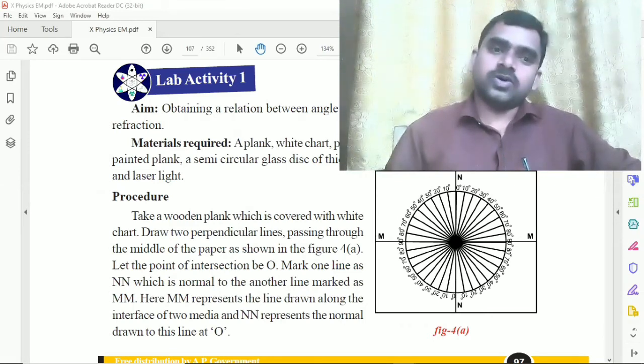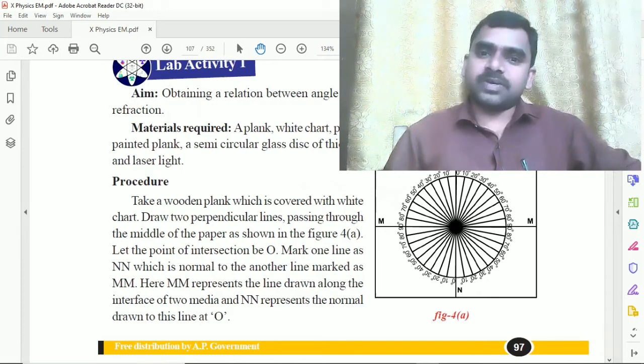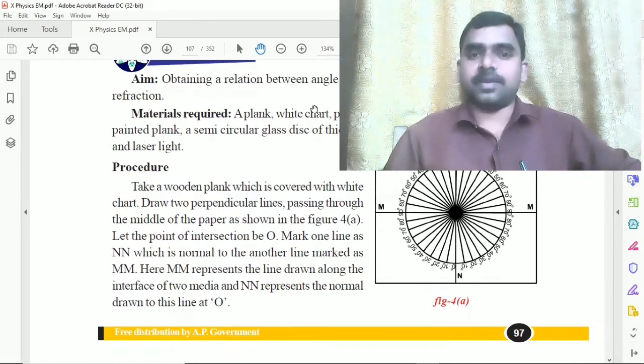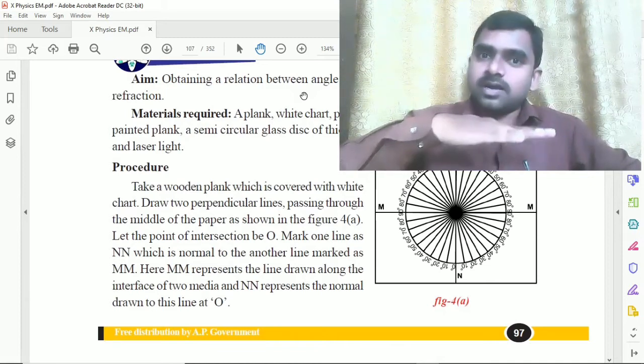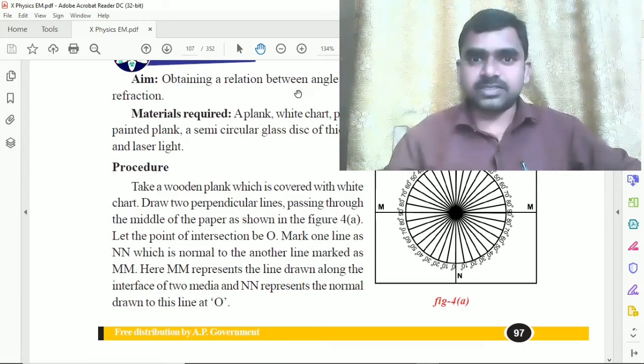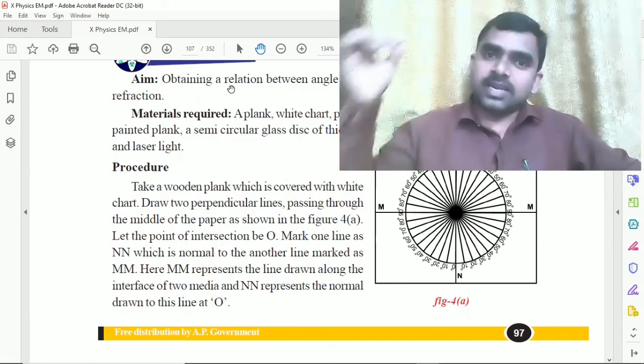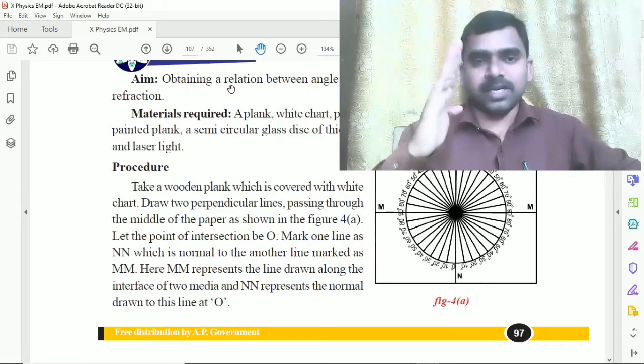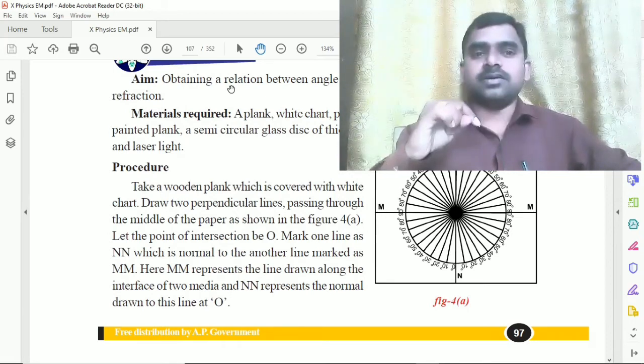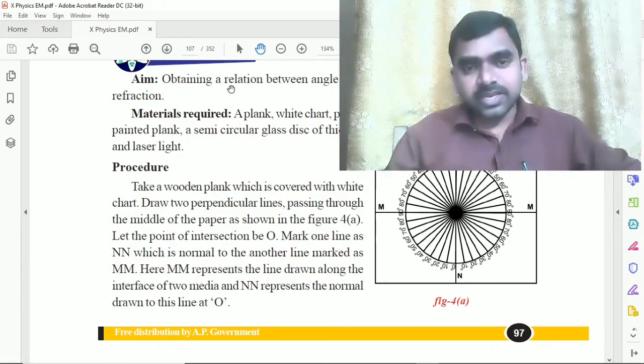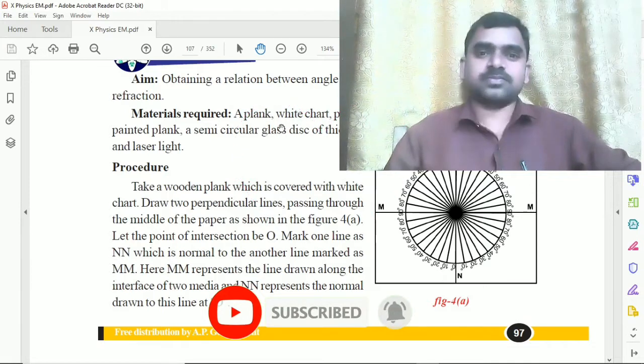Today I would like to continue the lab activity one. What is our aim? Obtaining a relation between the angle of incidence and angle of refraction. The angle between the incident ray and normal is angle of incidence, denoted by small i. When light travels from one medium to another, light will bend. That phenomenon is called refraction. The angle between the refracted ray and normal is called angle of refraction. We have to prove that sine i by sine r equals to constant.